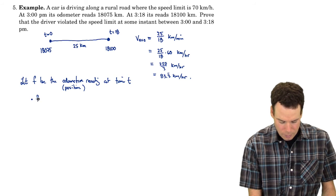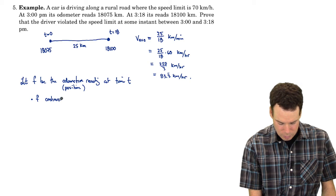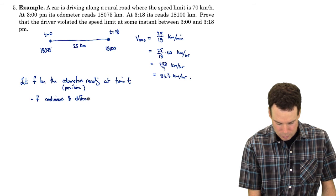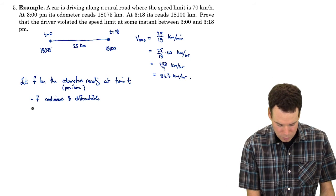Well, we can assume f is continuous and differentiable. It's just by the nature of how we travel in a car. We travel continuously and smoothly, so it's got to be continuous and differentiable.